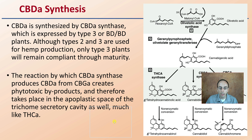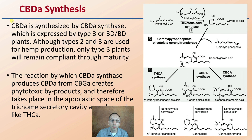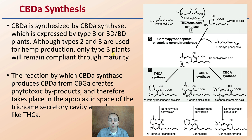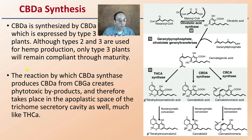So, CBDA synthesis — how we're going about synthesizing this. CBDA is synthesized by CBDA synthase, which is expressed by type 3, or BD/BD plants. Although types 2 and 3 are used for hemp production, only type 3 plants will remain compliant through maturity — that is, having lower than 0.3% THC. The reaction by which CBDA synthase produces CBDA from CBGA creates phytotoxic byproducts, and therefore takes place in the apoplastic space of the trichome secretory vesicle, much like THCA.